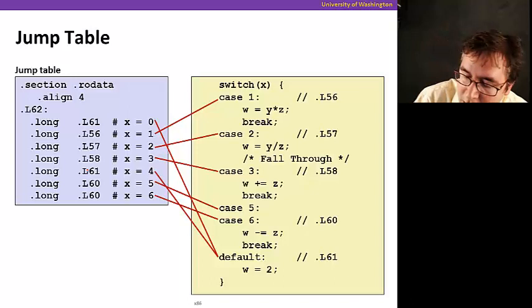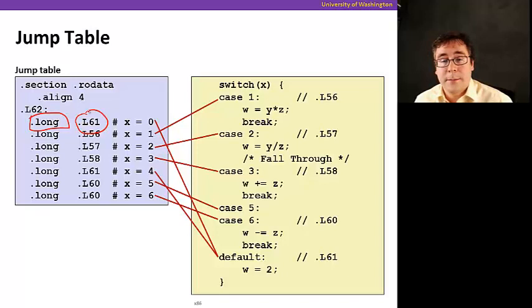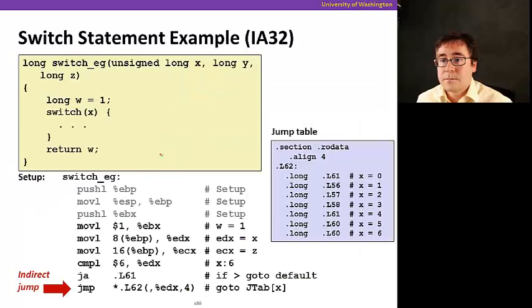Now this jump table is just a list of addresses. And here's how it gets set up. In assembly, you'd see a declaration of a long word that happens to be the same value as the label that maps to the address of the code block. So now this, for example, if we take .L61, that's where the default code block starts. So the corresponding instruction address is going to be stored here. And same thing for the other case values.